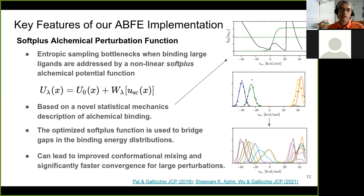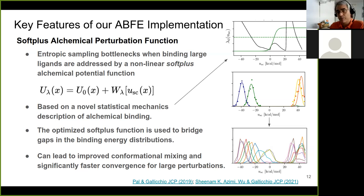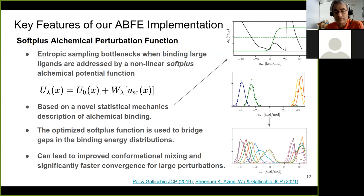For difficult transformations involving large ligands, we deployed a non-linear alchemical function — a softplus function from machine learning. This is coupled to a theory of chemical binding developed as the major result of Rajat Powell's PhD thesis. We developed a graphical construction that lets us optimize the parameters of the alchemical function. The idea is to remove gaps in binding energy distributions and perturbation energy distributions. These are technical details we've had to solve to make this thing work, and for the most part they are now solved.